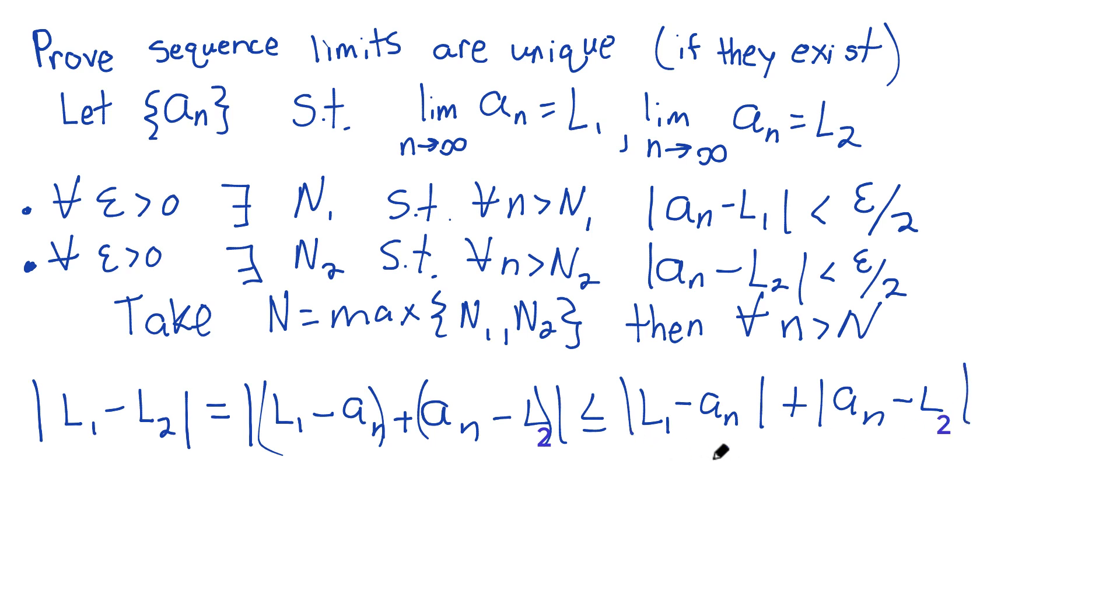And you might be a little concerned that these are flipped via what we have before, but you could factor out a negative, and the absolute value of a negative is simply the same thing. So it's really equivalent to writing it the way we have above. And what's nice about this, now we have this first piece is less than epsilon over 2, plus the second piece is also less than epsilon over 2. Epsilon over 2 plus epsilon over 2 is epsilon. And so what we have is that the absolute value of the difference of the limits is less than epsilon. In other words, those two limits are the same, and sequence limits are unique.